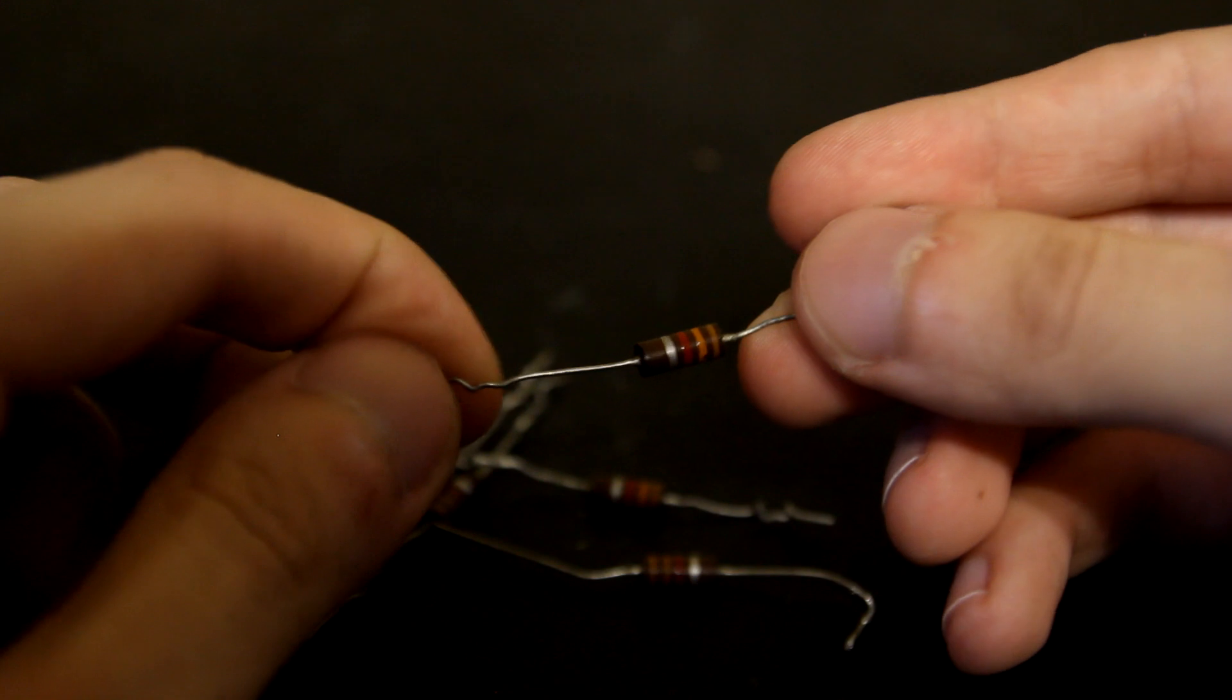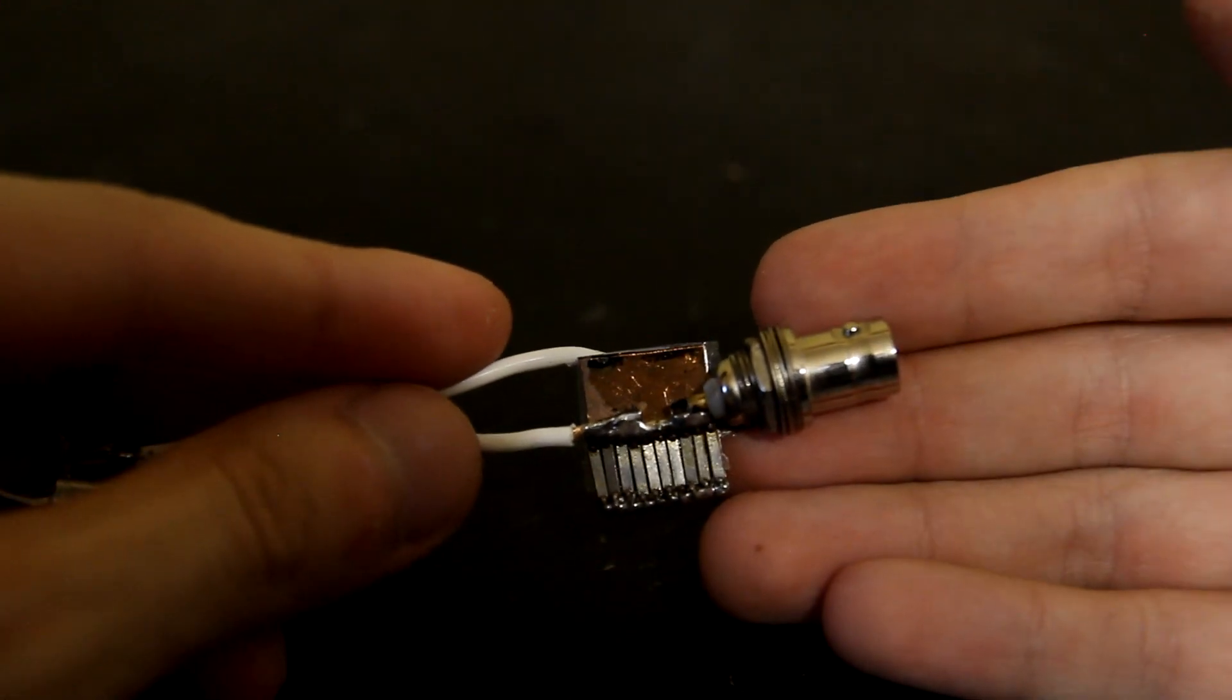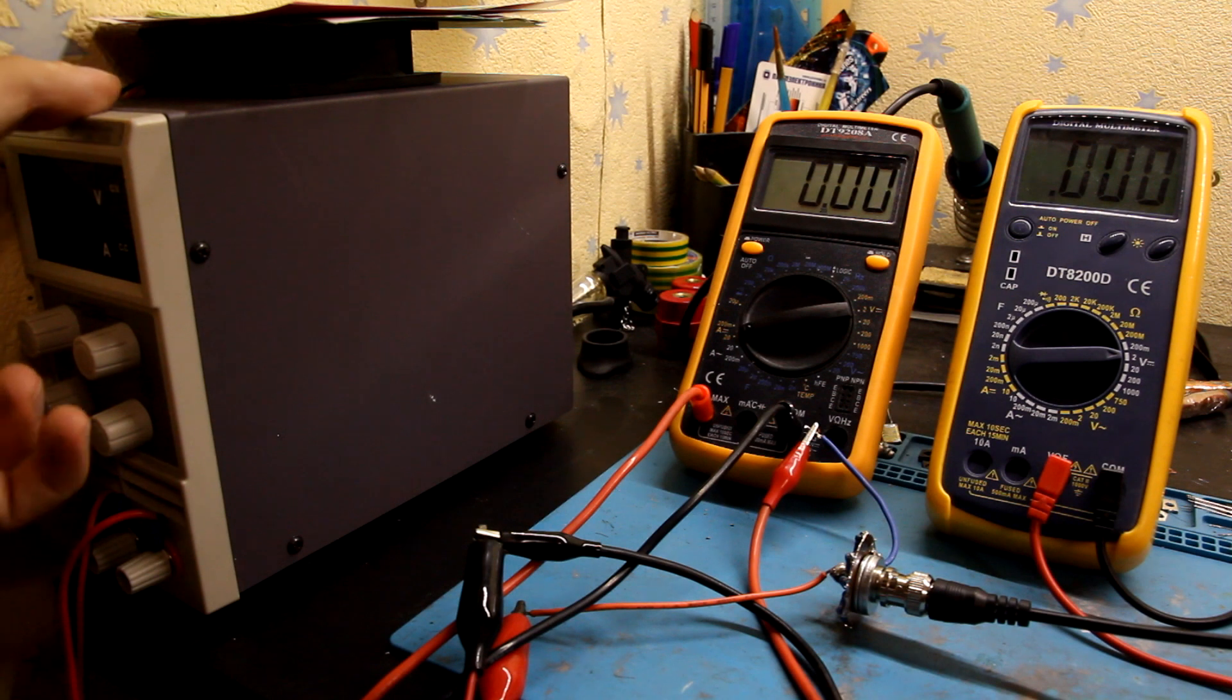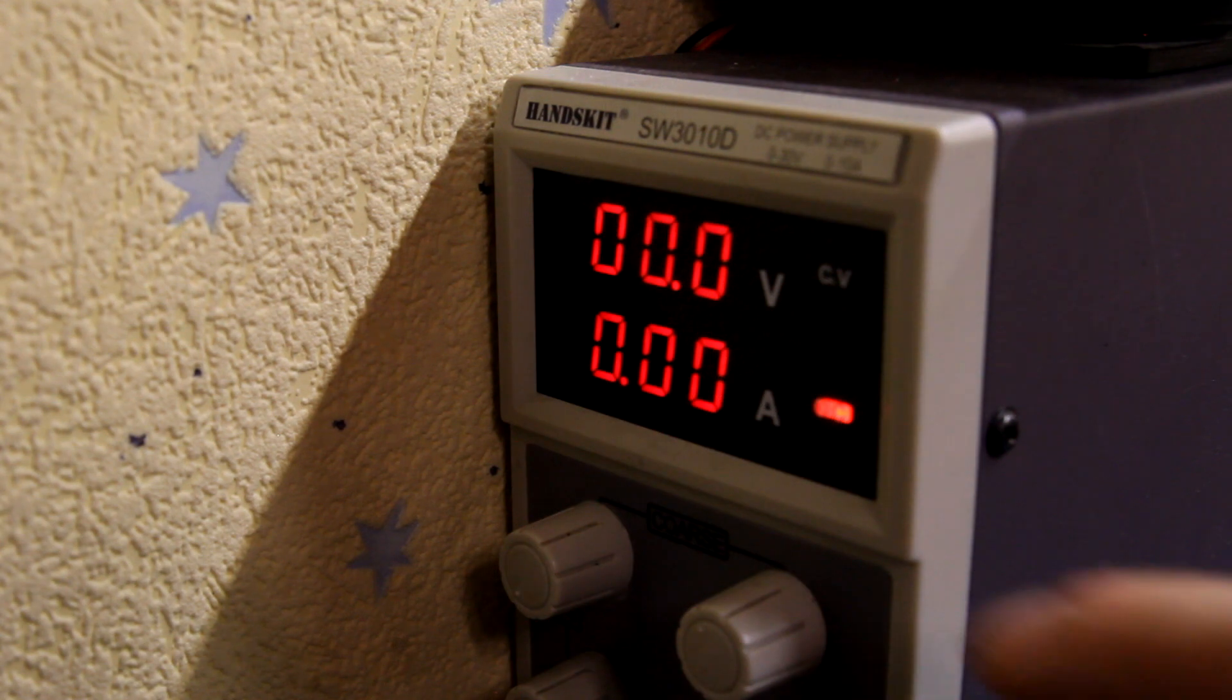But in the future I might use them and show you the results. The last shunt uses nichrome strip resistors and will be covered in more detail in part 2. Every shunt was calibrated on DC current from my lab bench power supply to measure its resistance precisely.